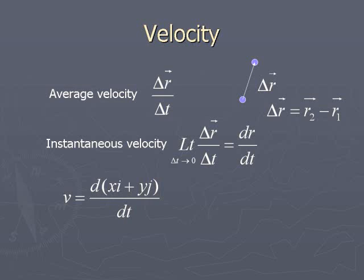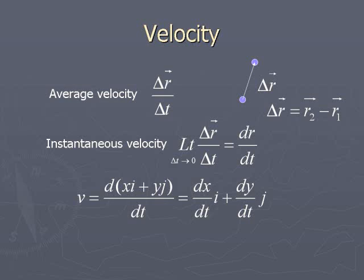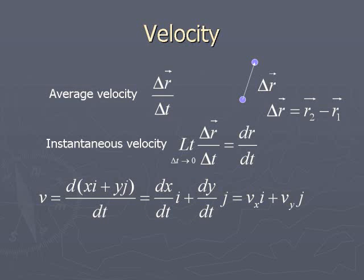We have already represented the position vector R̄ as x·i + y·j. So velocity equals d/dt of (x·i + y·j), which gives dx/dt·i plus dy/dt·j, which equals vx·i plus vy·j. This is the relation for the velocity of the particle.